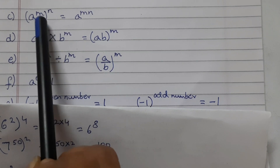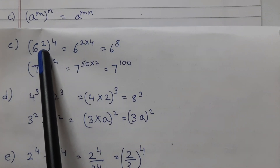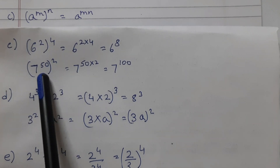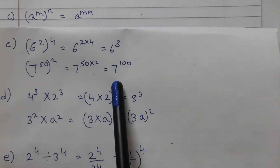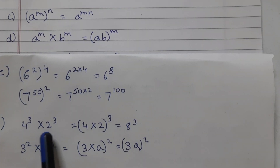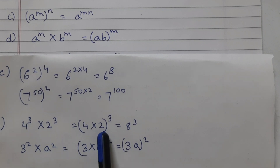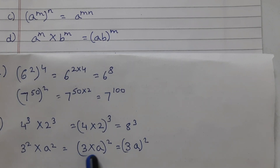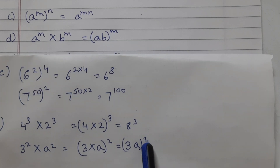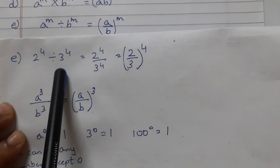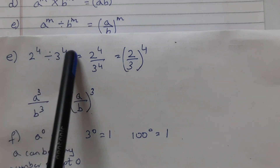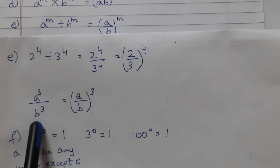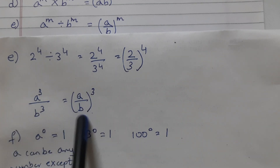Third law — power of a power — multiply both exponents: multiply 2 and 4, that's 8, so 6 raised to the power of 8 is the answer. Power of a power: 50 into 2 is 100, so 7 raised to the power of 100. Different base, multiplication sign, same exponent — multiply the bases: that's 4 to 8 raised to the power of 3. Similarly, different base, multiplication sign — 3 into a is 3a raised to the power of 2. Next: different base, division sign, same exponents — divide the bases: 2 by 3 raised to the power of 4. It can also be given as a by b raised to the power of 3.